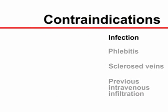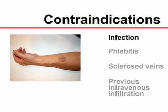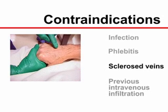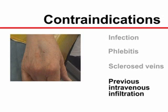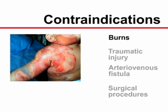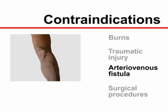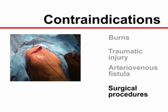Relative contraindications to inserting a peripheral catheter in a specific site may include infection, phlebitis, sclerosed veins, previous intravenous infiltration, burns or traumatic injury proximal to the insertion site, arteriovenous fistula in an extremity, and surgical procedures affecting an extremity.